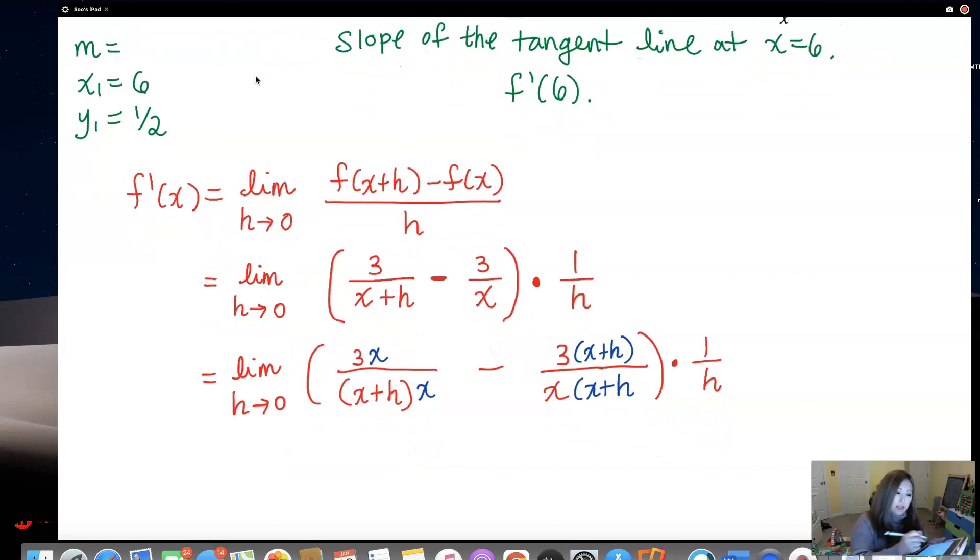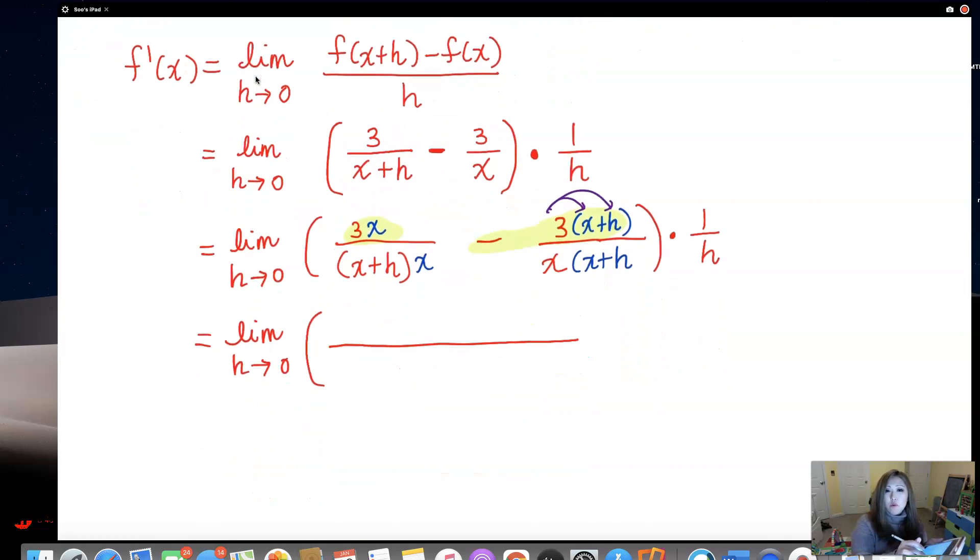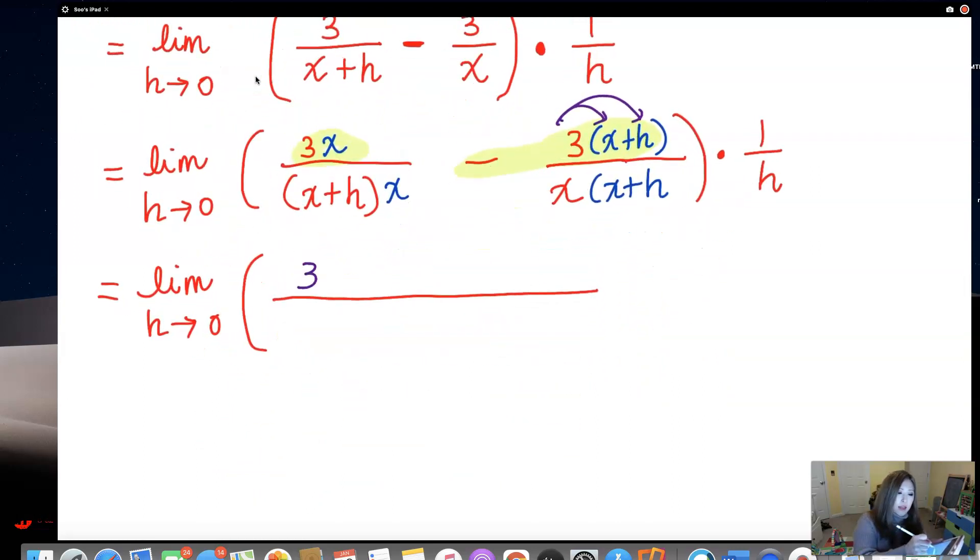Equals limit h approaches 0. And then it's time for us to write the numerator in a single line. The numerator is 3x minus 3 times x plus h. Let's go ahead and distribute. Let's distribute the negative 3 in, not the positive 3 but negative 3. What will that be? 3x minus 3x, and then minus 3h. That's it for the numerator. And for the denominator, I forgot to close that parenthesis, the denominator is going to be x times x plus h. And I will close this big door and do 1 over h outside.